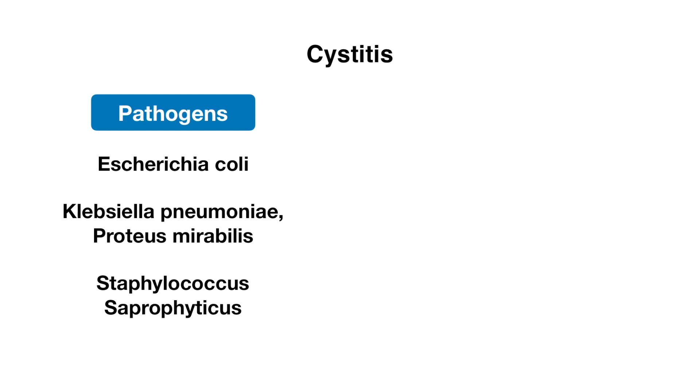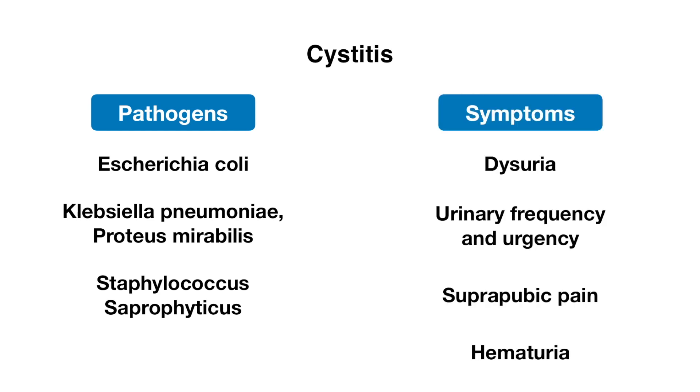Symptoms of cystitis include dysuria or painful urination, urinary frequency and urgency, suprapubic pain, as well as hematuria.